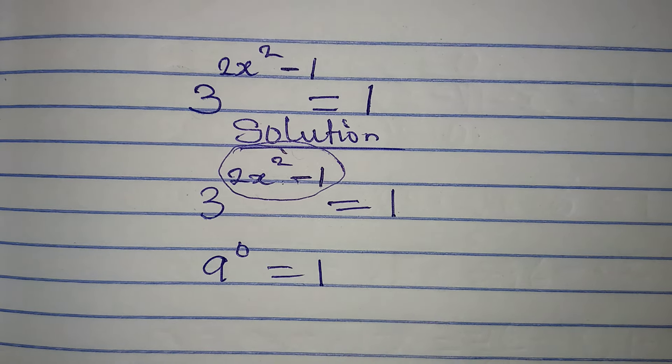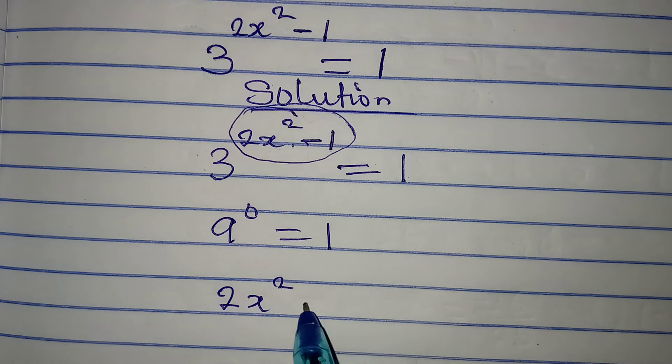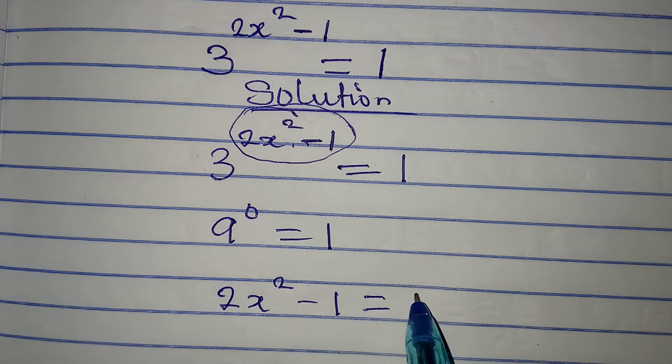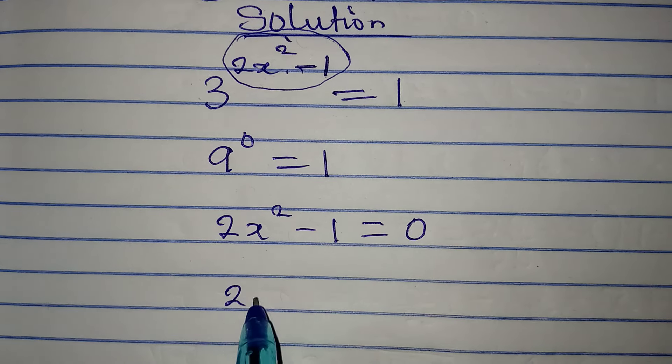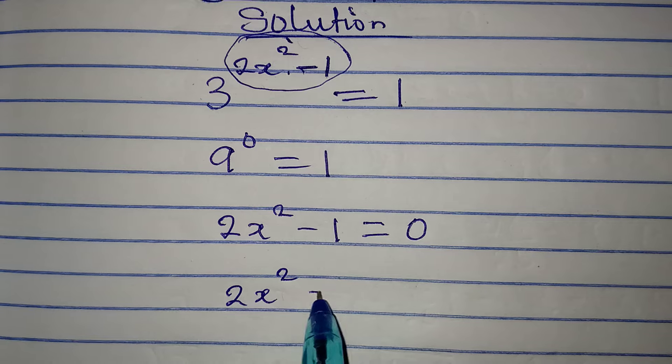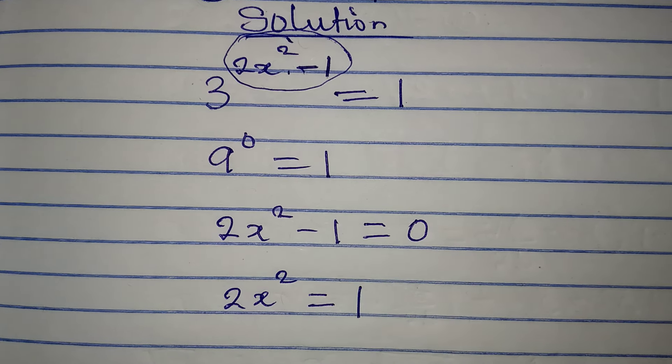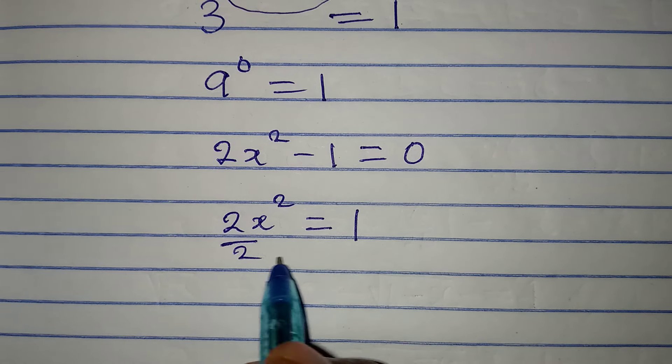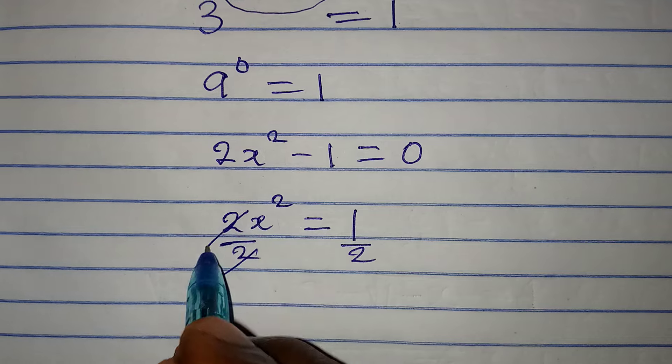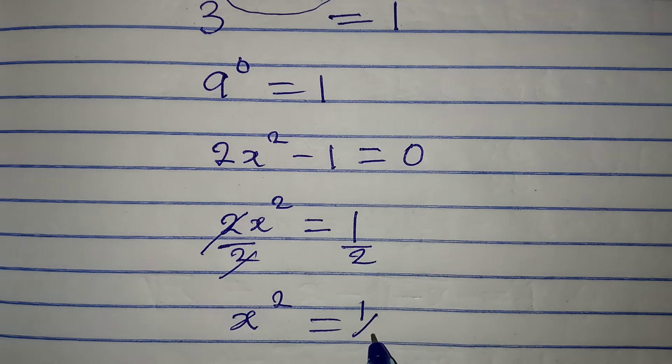So equate this to 0 and that will give us 2x squared minus 1 equal to 0. Okay, so from here 2x squared will be equal to 1. Now divide by 2, 2 cancels 2 and then x squared is equal to 1 over 2.